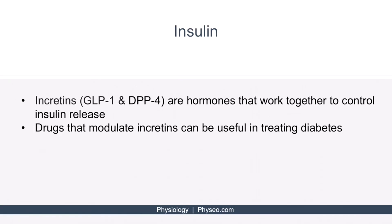Incretins like glucagon-like peptide 1, or GLP-1, and dipeptidase 4, or DPP-4, are hormones that control the release of insulin. And drugs that modulate incretins can be useful in treating diabetes.